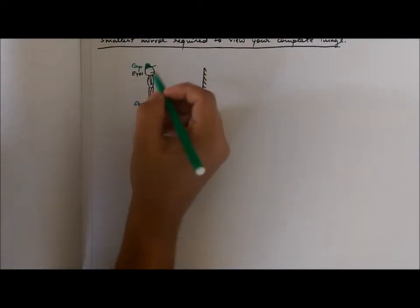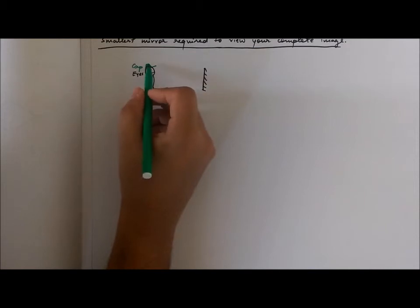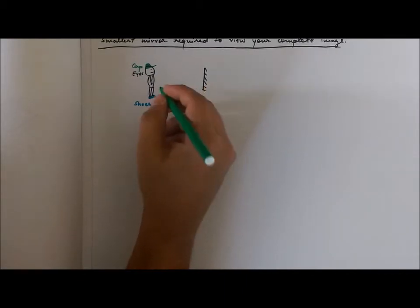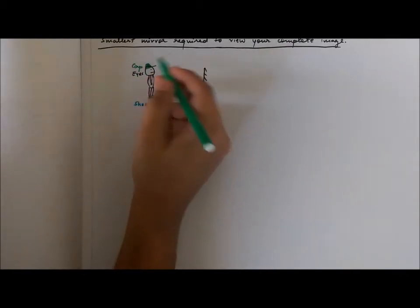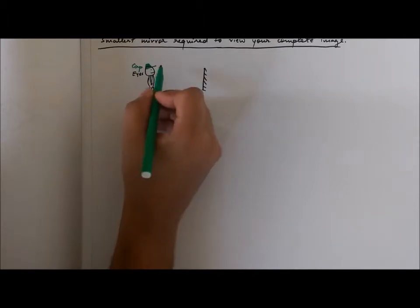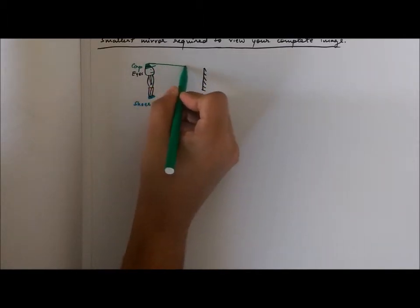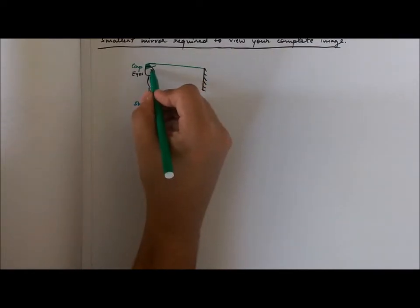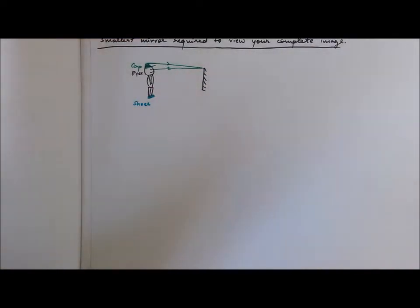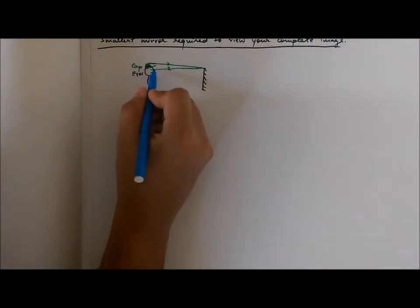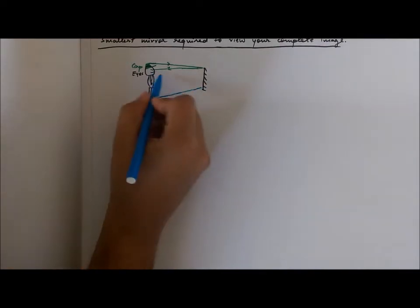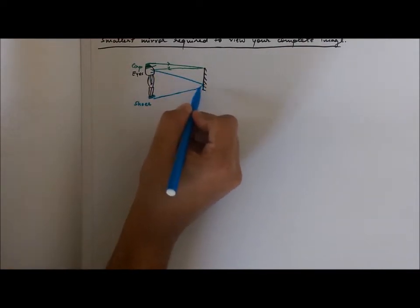Since I want only the topmost part of the cap and the bottommost part of my shoes to be visible in the mirror, I want the topmost ray of light coming from my cap to reflect off the mirror and enter my eyes. Similarly, I want the ray from the bottommost part of my shoes to reflect off the mirror and enter my eyes.